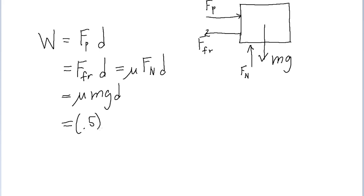The coefficient of friction is given to us as 0.5. The mass of the crate is given as 46 kilograms. The gravitational acceleration is 9.8 meters per second squared. And the distance over which the box is pushed is 10.3 meters.